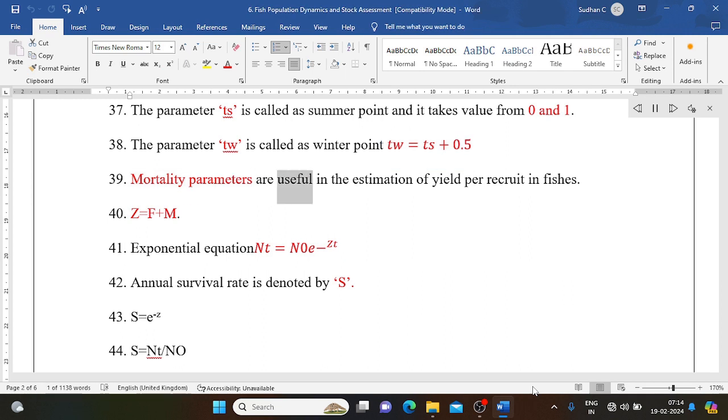Mortality parameters are useful in the estimation of yield per recruit in fishes. Z equals F plus M. Exponential equation: N(t) equals N0 times e to the minus Zt.